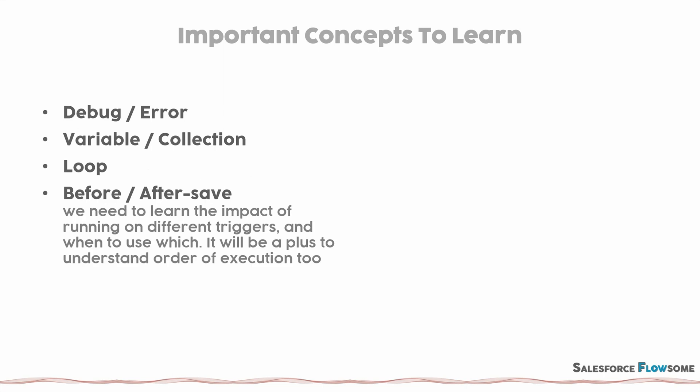The next concept is before and after save triggers. Flow provides more fragmented triggers than workflow and process builder, so we need to understand what the use case is for each one. It will also be a plus to understand the order of execution, because that's the key to understanding what really happens in the backend and what the interaction is between your different automation solutions.